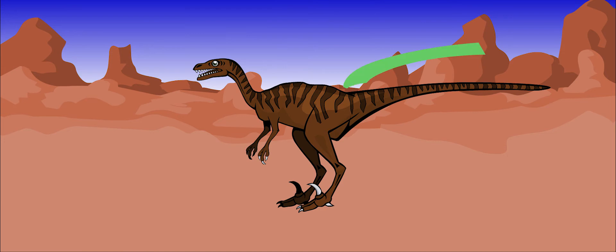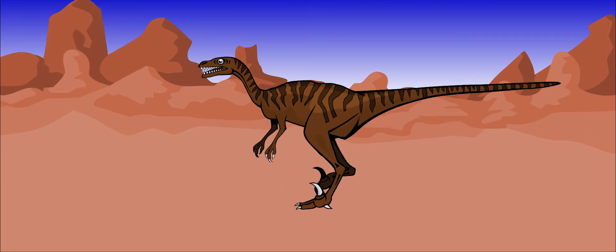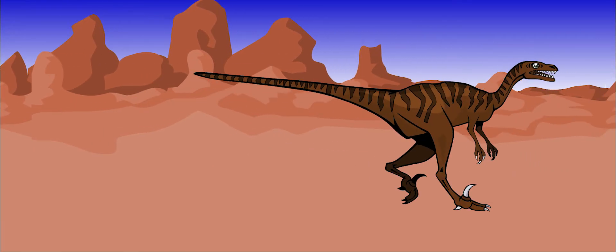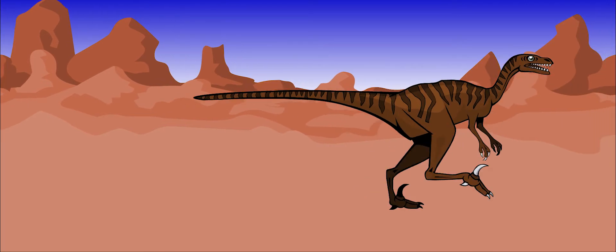Velociraptor had a stiff tail that helped to balance it as it ran. When it swung its tail from left to right, it could make very sharp turns. It could probably even turn in midair.